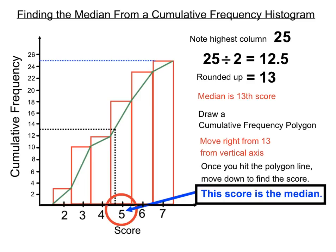So how do we find the 13th score? We figured out that the 13th score must be the median. What we did was get the spot where 13 is on the vertical axis and go across to hit the polygon. It's important that we hit the polygon and not just the column. If we hit the column there, we wouldn't be sure whether it's a four or a five we're looking for.